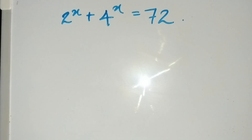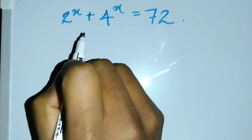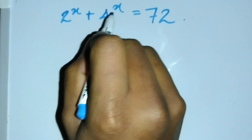Hello guys, in this video we are going to solve this mathematical equation and we have to find the value of x. We have 2^x plus 4^x equals 72.